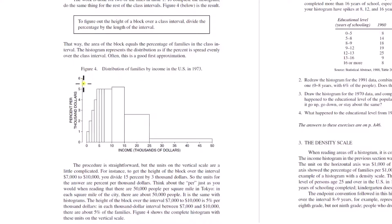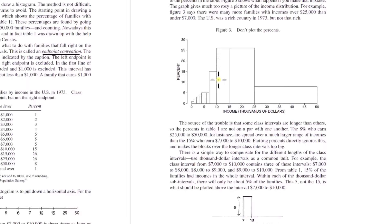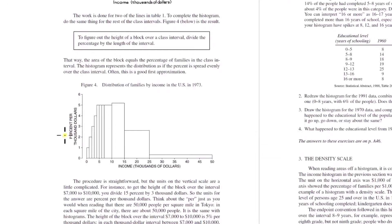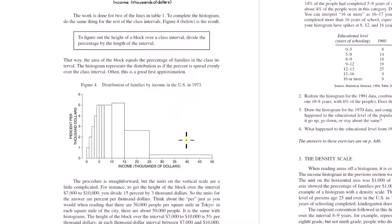What are the units of the vertical axis in a correctly drawn histogram? If you make the heights equal to the percents in the table, the units would be percent — but that's not correct. The units of the vertical axis are percent per whatever unit the horizontal axis uses. For the interval 10 to 15, the width is $5,000, so 26% divided by 5 gives percent per thousand dollars. Similarly, for the interval 7,000 to 10,000, you divide 15% by $3,000, giving units of percent per thousand dollars.